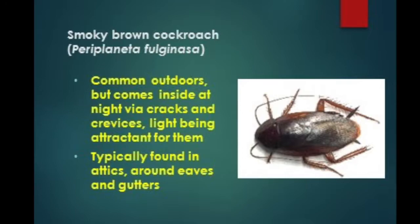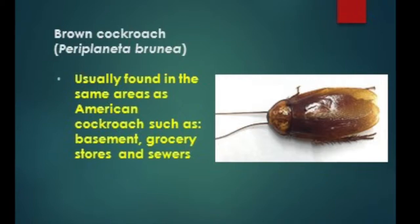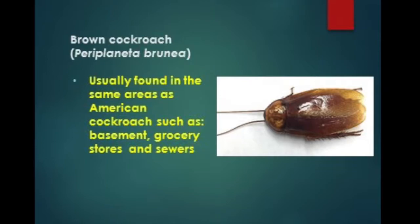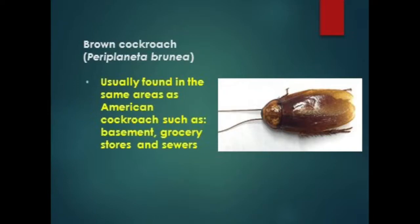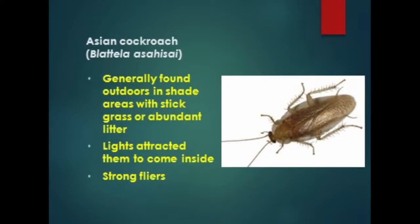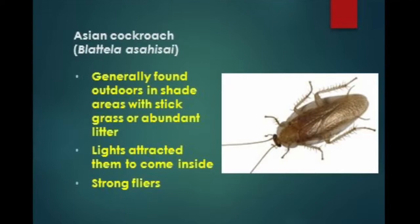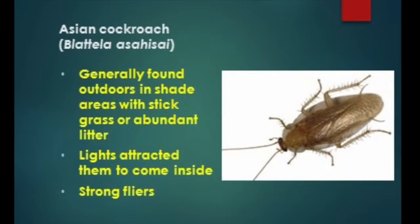The smoky brown cockroach is attracted to light, and you can typically find them in attics, around eaves, and gutters. Brown cockroaches are habitually found in the same areas as American cockroaches, such as basements, grocery stores, and sewers. The Asian cockroach is typically found outdoors in shaded areas with thick grass or abundant leaf litter; lights attract them indoors and they are strong fliers.